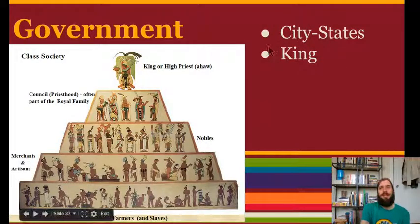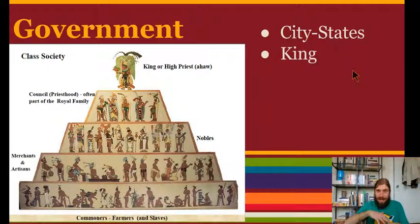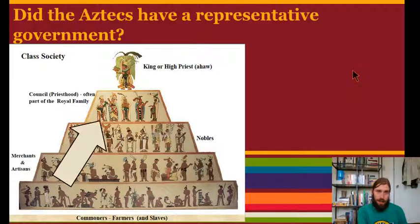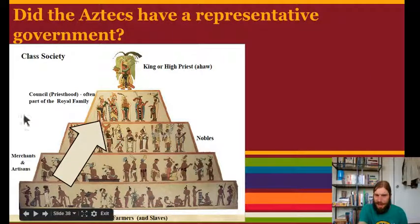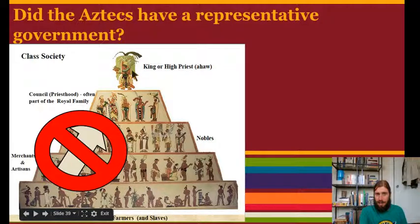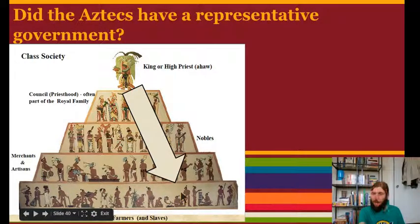Government. Just like the Mayans, the government of the Aztecs was set up in city-states — a city would control the state around it, and they were ruled by kings. Now our government is a representative government, meaning that the people get to vote or choose their leaders. Did the people in the Aztec Empire get to choose their leader? The answer is no. They were chosen from the royal family, so only the family got to choose who the king would be. The king had all the power over the people.